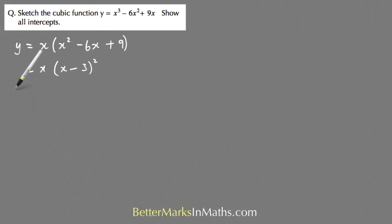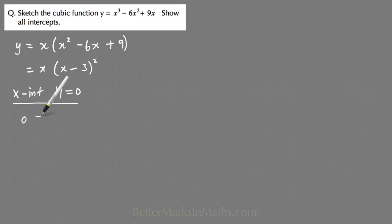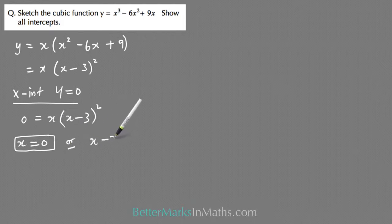From here, you can find the x intercepts by letting y equals 0, and that means 0 equals x bracket x minus 3 squared. From there you can say either x is 0, that's the first x intercept, or x minus 3 all squared equals 0. Getting rid of that square by taking the square root of both sides, you get x minus 3 equals 0, and from there x equals 3, the second x intercept.